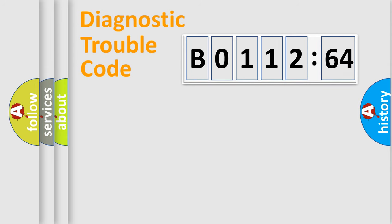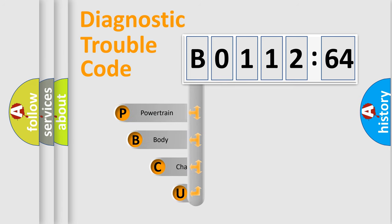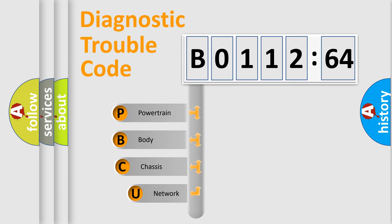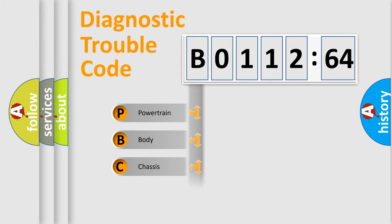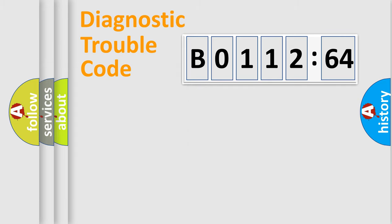Let's do this. First, let's look at the history of diagnostic fault code composition according to the OBD2 protocol, which is unified for all automakers since 2000. We divide the electric system of the automobile into four basic units: Powertrain, Body, Chassis, and Network.